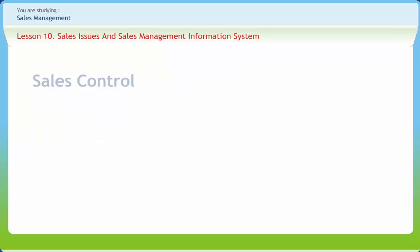There are two types of sales control: annual plan control and profitability control. Annual plan control is the responsibility of top-level managers and concerns sales analysis, market share analysis, and marketing expenses to sales ratio. Profitability control is the responsibility of the sales controller and checks customer attitude tracking, profitability by product, territory, market share, trade channel, and order size.